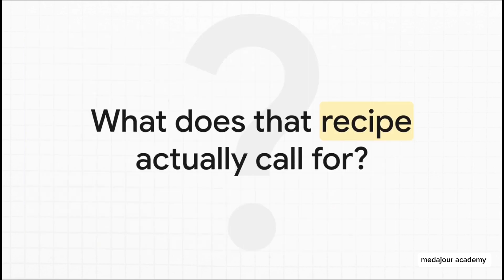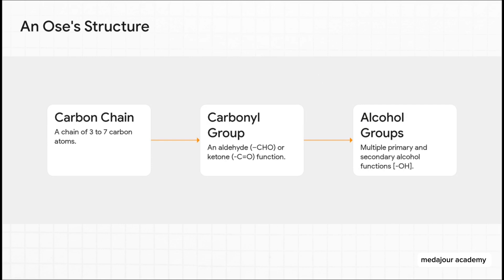What does polyhydroxylated aldehyde or ketone really mean? It's a blueprint with just three core ingredients. First, you start with a backbone of carbon atoms — just a simple chain of them. Second, you add one very special carbonyl group — the molecule's reactive hotspot, where a carbon is double bonded to an oxygen, and where all the cool chemistry happens. And third, you fill in the rest of that carbon backbone with a bunch of alcohol groups. A carbon chain, one reactive carbonyl, and several alcohols.